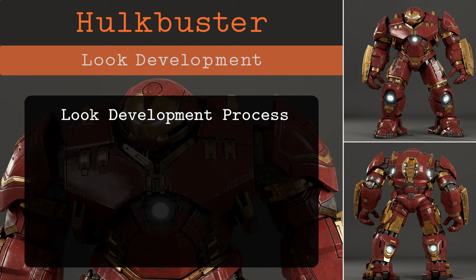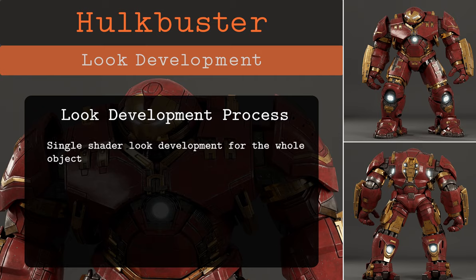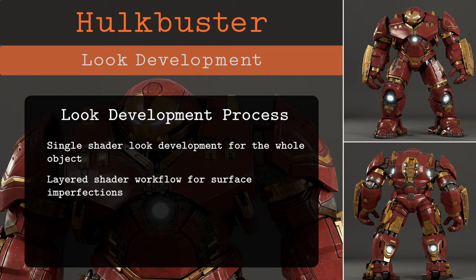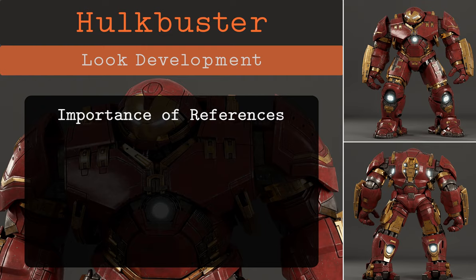For a faster workflow we'll be doing the look development using a single shader for the whole Hulkbuster parts. We'll use a layered shader to create separate shaders for each surface imperfection, so we have separate control over each one. Since it's expected to be a really long tutorial, I'll be covering each part in separate videos. The lighting setup is a simple light trick I created for look development with simple area lights — check out my other tutorial on creating a look development rig with area lights.